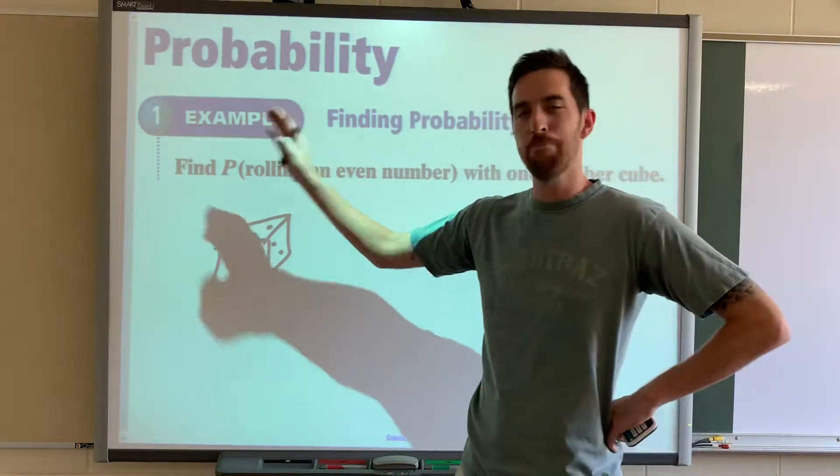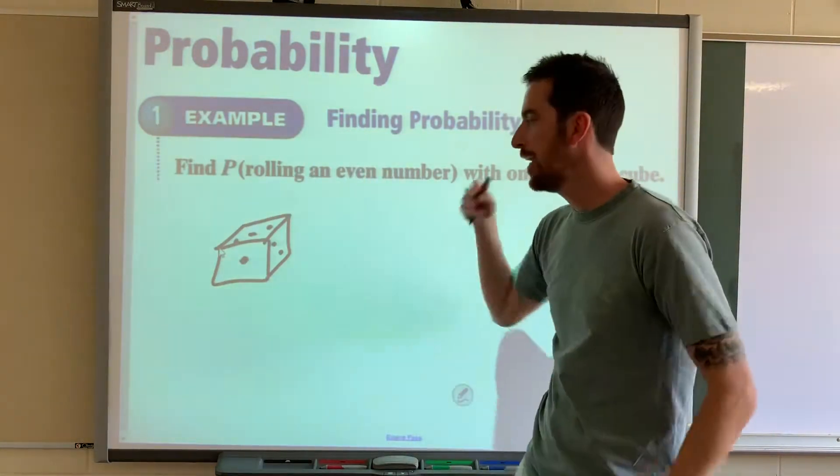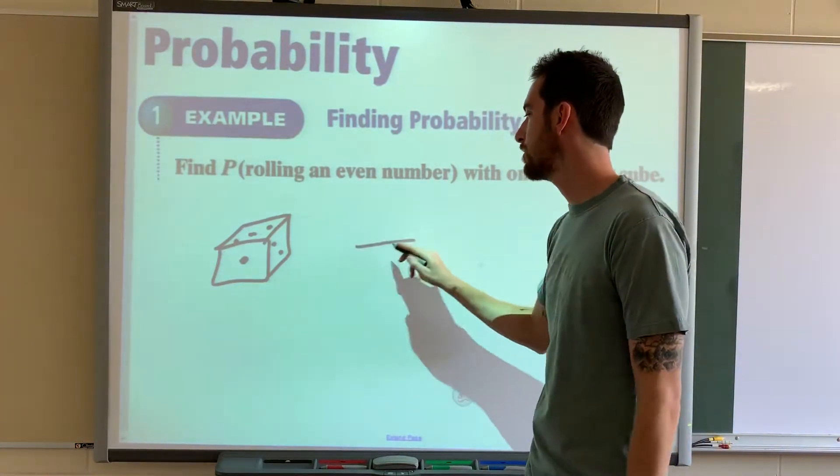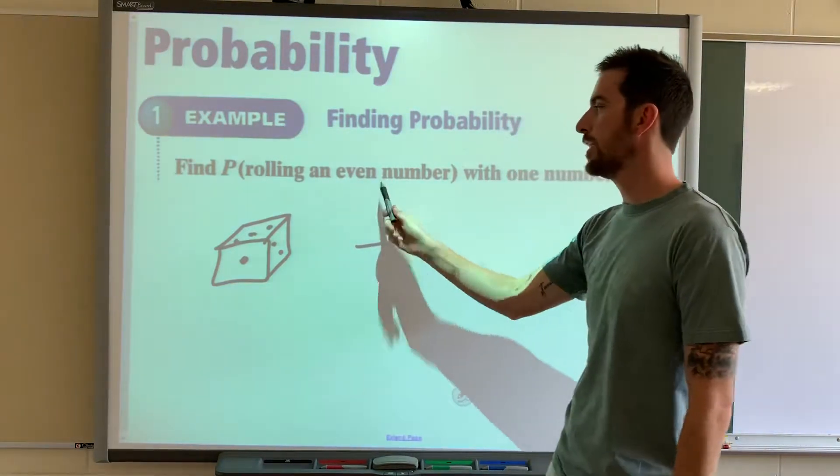So when they have P and then parentheses, that's saying find the probability of this happening. How many sides are on a die? There are six sides.